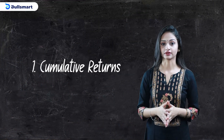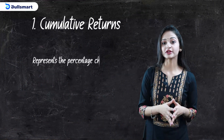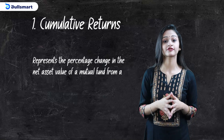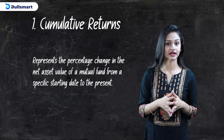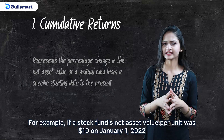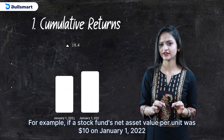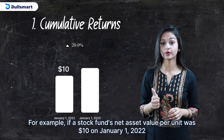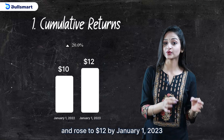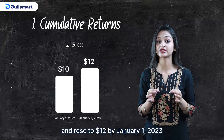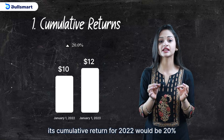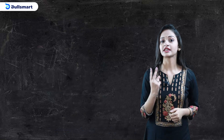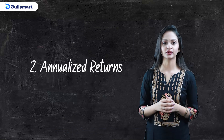Number one: cumulative returns. It represents the percentage change in the net asset value of a mutual fund from a specific starting date to the present. For example, if a stock fund's net asset value per unit was $10 on January 1, 2022 and rose to $12 by January 1, 2023, its cumulative return for 2022 would be 20%.